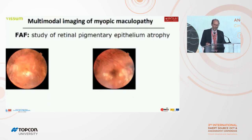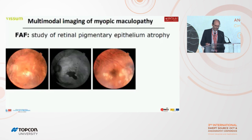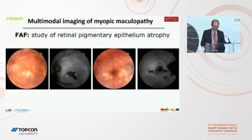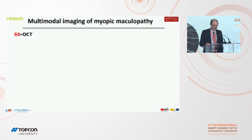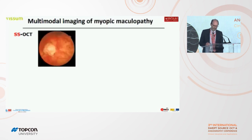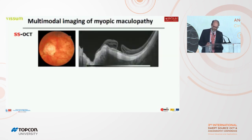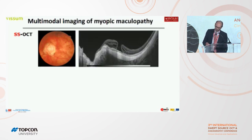Fundus autofluorescence can help us to perfectly delineate the changes in the RPE in myopic patients, because it is not always easy to detect. But in my opinion, it is OCT, especially swept-source OCT, which gives us more information to know and to study myopic maculopathy. We can see one case of macular hole with OCT — not only the retina, the hole, the choroid, the sclera, but also the orbital fat.